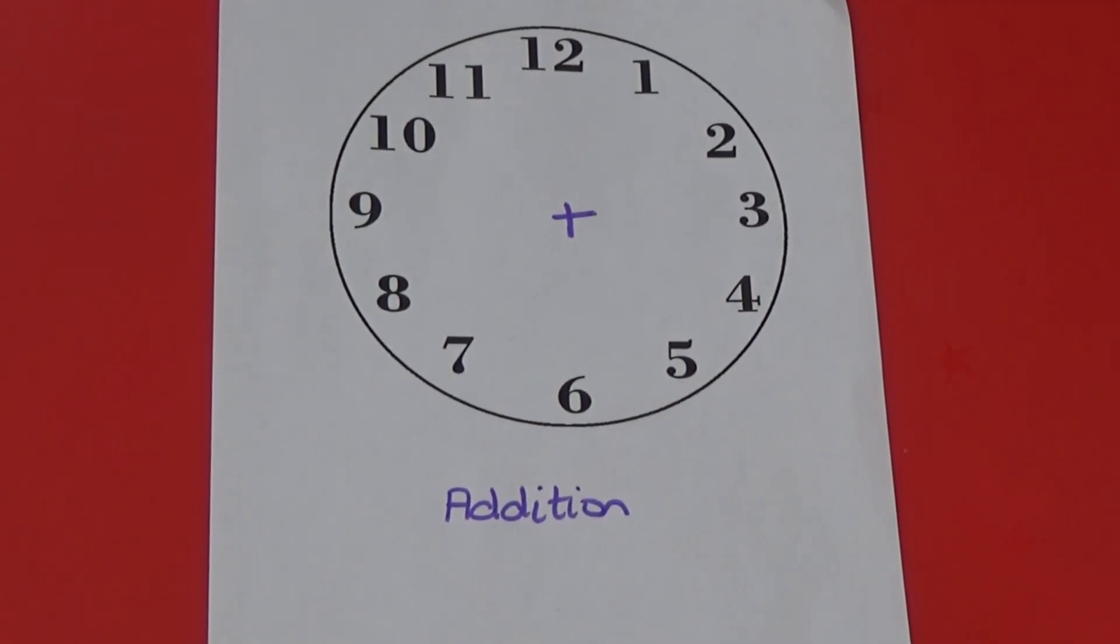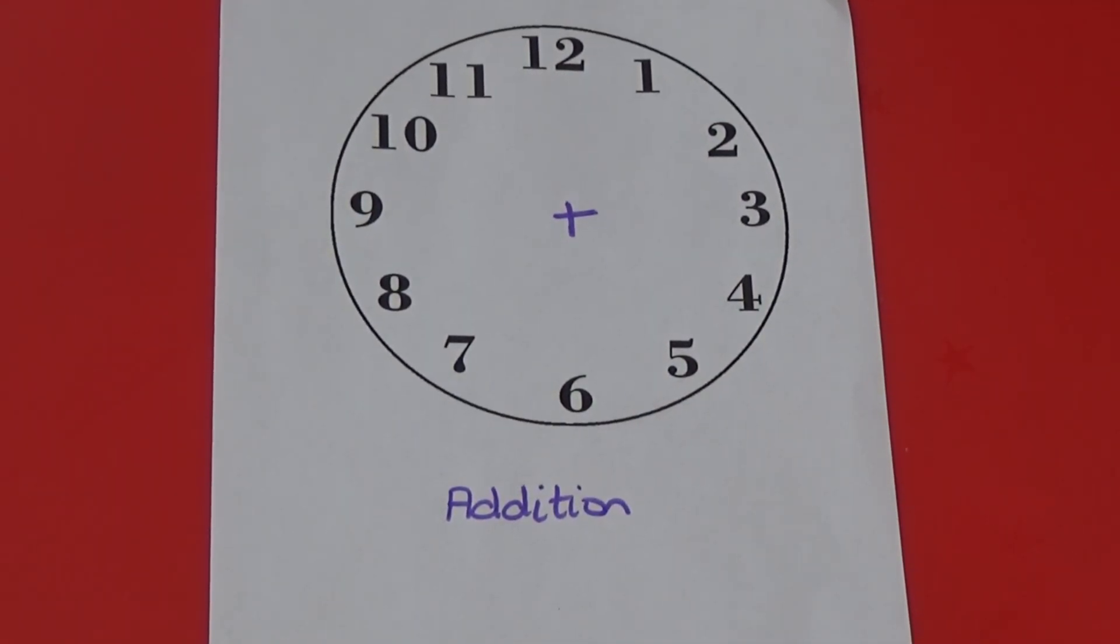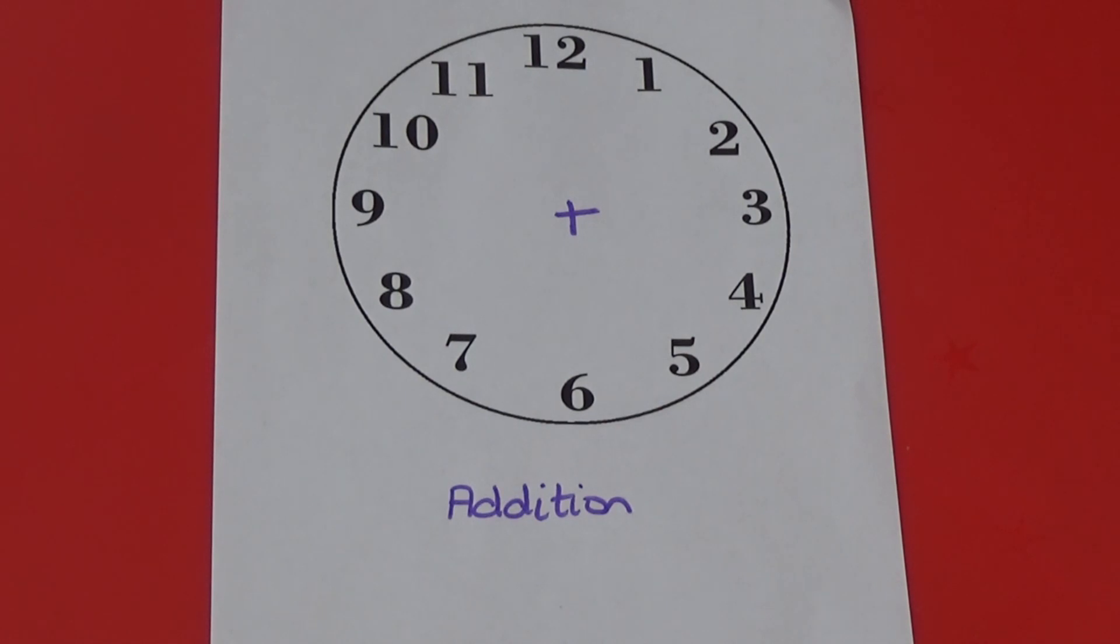For the final one I'm going to show you one more addition one. If you add the numbers diagonally the other way they add up to eleven.